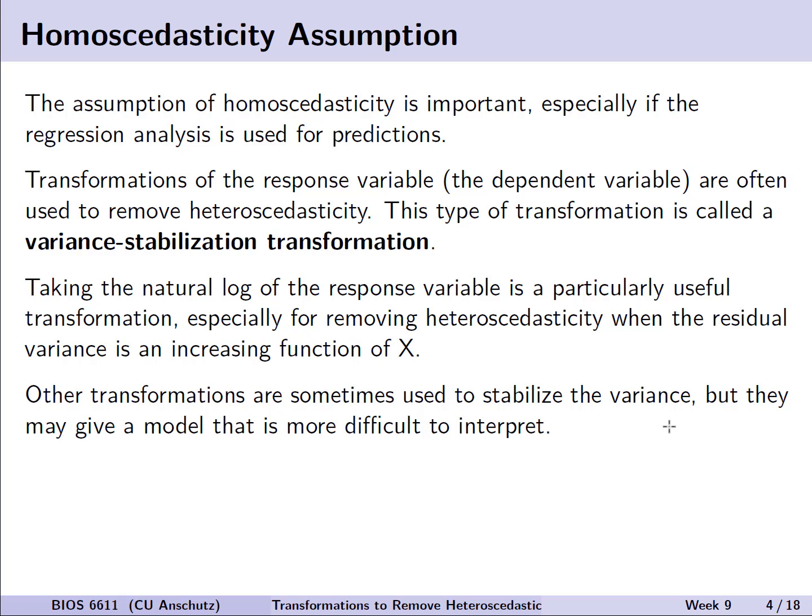Let's first revisit this assumption of homoskedasticity. This is an important assumption about equal variances, especially if we're trying to use our regression analysis for prediction. Transformations of our response variable, or the dependent variable y, are often used to try to remove some of this heteroskedasticity. This type of transformation is generally known as a variance stabilization transformation, and a variety of them exist.